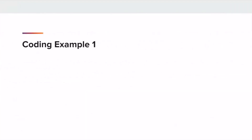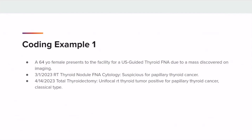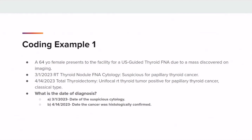Let's go through a coding example. A 64-year-old female presents to the facility for an ultrasound-guided thyroid FNA due to a mass discovered on imaging. On 3-1-2023, a right thyroid nodule FNA was performed and a cytology report was issued. On 4-14-2023, a total thyroidectomy was performed and the pathology confirmed the diagnosis. What is the date of diagnosis — is it A) 3-1-2023, the date of suspicious cytology, or B) 4-14-2023, the date the cancer was histologically confirmed? The answer is A, 3-1-2023. Per SEER and STORE, code the date of diagnosis to the date of the suspicious cytology when it is later confirmed.